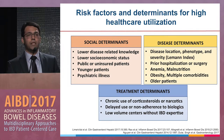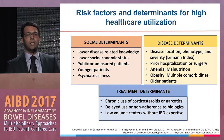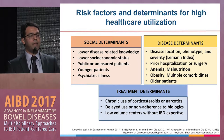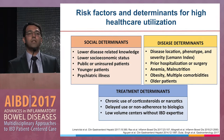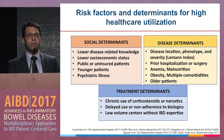Risk factors and determinants of high healthcare utilization can be divided into three aspects. Social determinants include patients with low disease-related knowledge, lower socioeconomic status, and patients with psychiatric illnesses. Disease-related determinants include the burden of disease — the Lémann index, disease phenotype severity, and comorbid conditions including obesity and older patients.